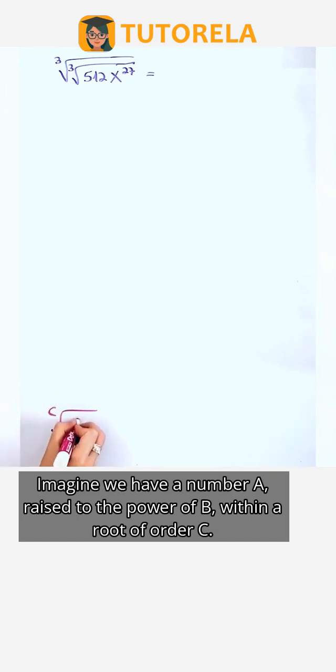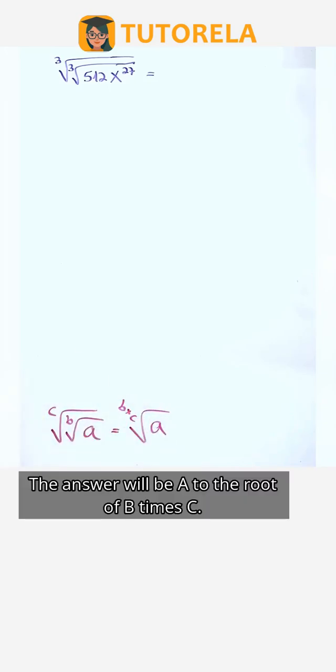Imagine we have a number a raised to the power of b within a root of order c. The answer will be a to the root of b times c.